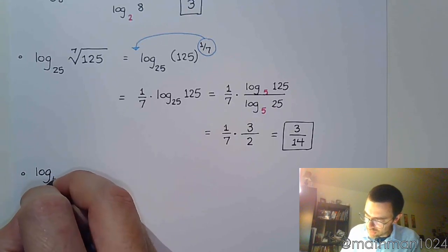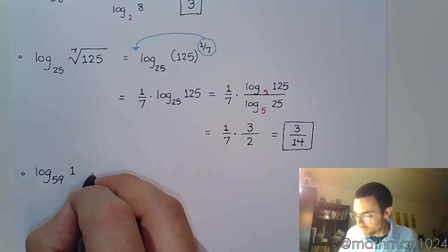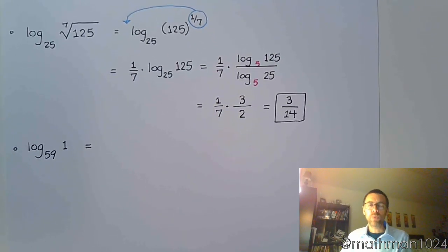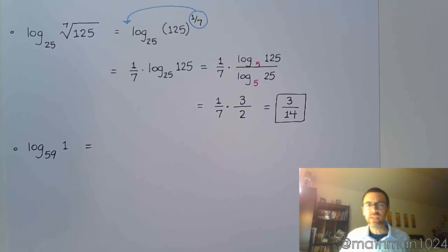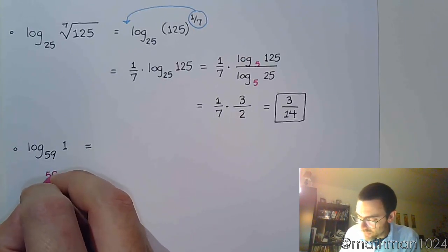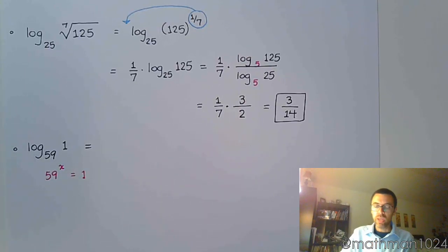If I have log base 59 of 1. This is one of those, what I call a popcorn question. You should be able to do it very quickly. Not a whole lot of thinking going on. You just have to remember what this is asking. This is saying 59 to what power gives us 1. Well, one of the key points that we have for any logarithm is the key point 1, 0.